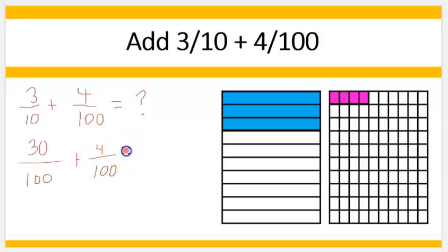Notice now I have the same denominator. So I still have to have the same denominator to add, but because I can easily convert between tenths and one hundredths, you can think of adding the 3 tenths plus 4 one hundredths.